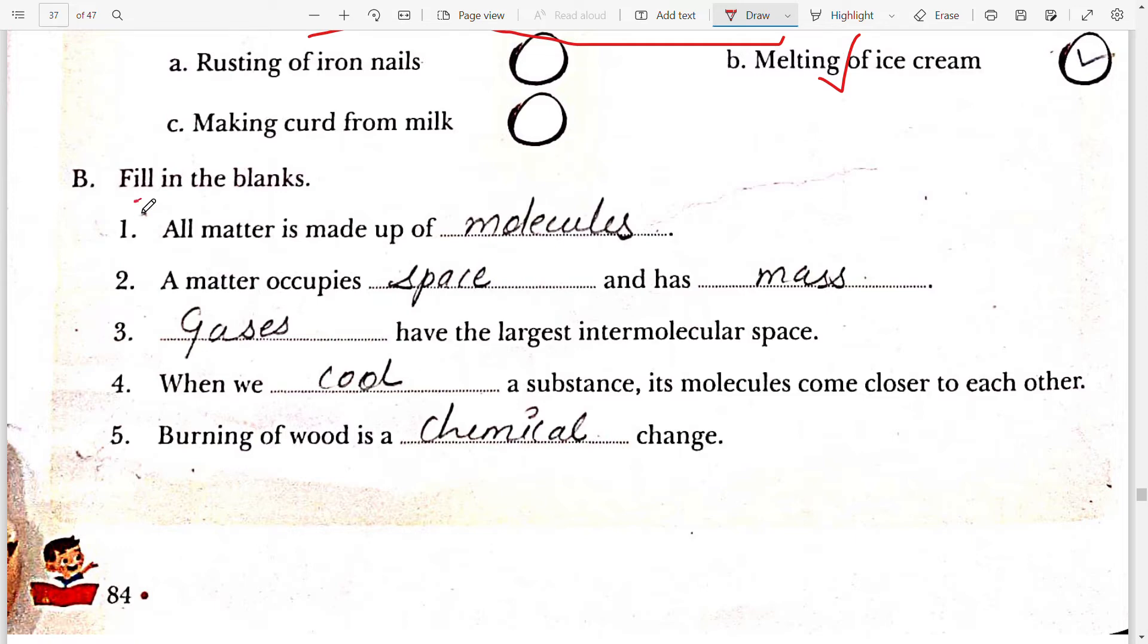B, fill in the blanks. All matter is made up of molecules. Second, a matter occupies space and has mass. Third, gases have the largest intermolecular space. Fourth, when we cool a substance its molecules become closer to each other. Fifth, burning of wood is a chemical change.